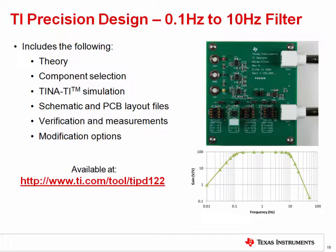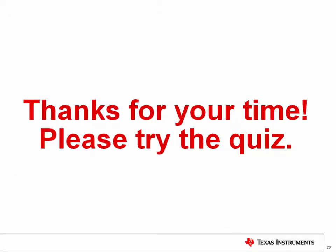The 0.1 Hz to 10 Hz filter circuit used for low-frequency noise measurements is freely available as a TI Precision Design. The design document covers the theory, simulation, and measurements in detail, and also provides circuit schematics, PCB layout files, and a bill of materials if you would like to build and test the circuit yourself. Many other high-quality precision designs are also available covering a variety of useful applications. That concludes this video — thank you for watching. Please try the quiz to check your understanding of this video's content.